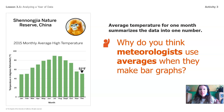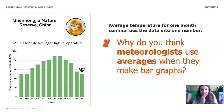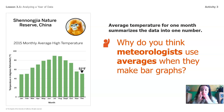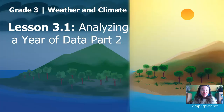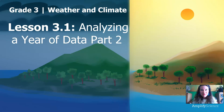Average temperature for one month summarizes the data into one easy-to-use number. Why do you think meteorologists use averages when they make a bar graph? It's much easier to take one number rather than looking at every single tiny piece of data. It's really hard for our brains to process that much information, so by taking one number to represent the whole month, we can easily compare all of the months. That's it for Lesson 3.1, Analyzing a Year of Data, Part 2. Great job — you did an awesome job helping me make a bar graph, and I think we learned some important information that's going to help us decide about the orangutan reserve. I'll see you next time for Lesson 3.2. Stay curious, bye-bye!